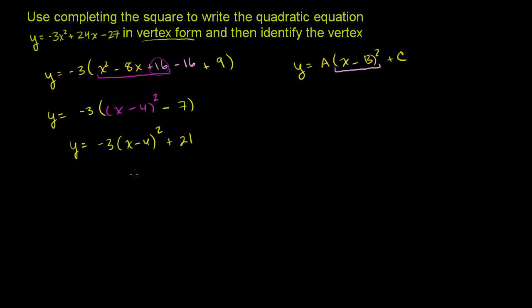And if you want to think about what the vertex is, I told you how to do it. You say, what's the x value that makes this equal to 0? Well, in order for this term to be 0, x minus 4 has to be equal to 0. Or add 4 to both sides. x has to be equal to 4. And if x is equal to 4, this is 0. This whole thing becomes 0. Then y is equal to 21.